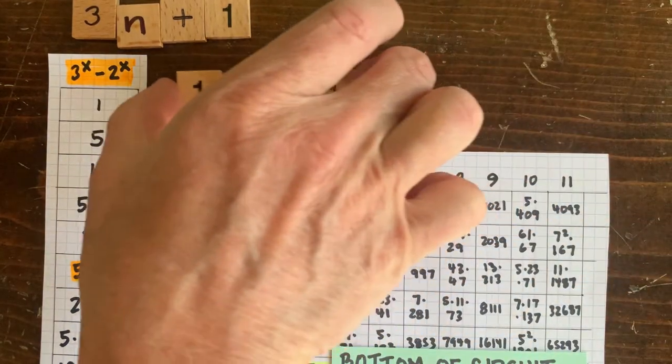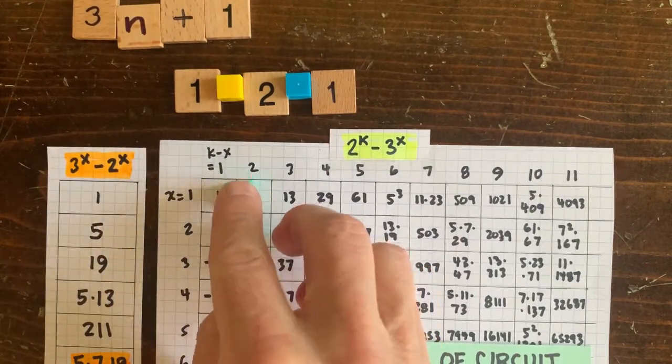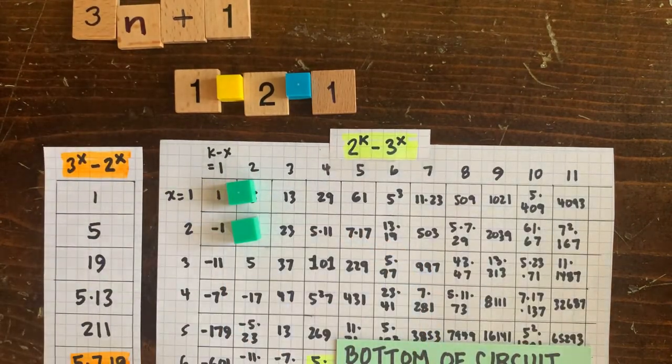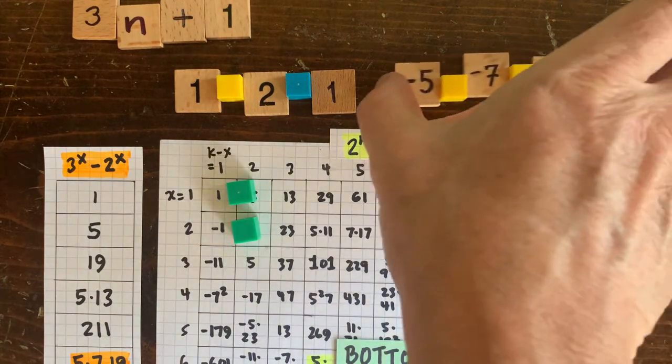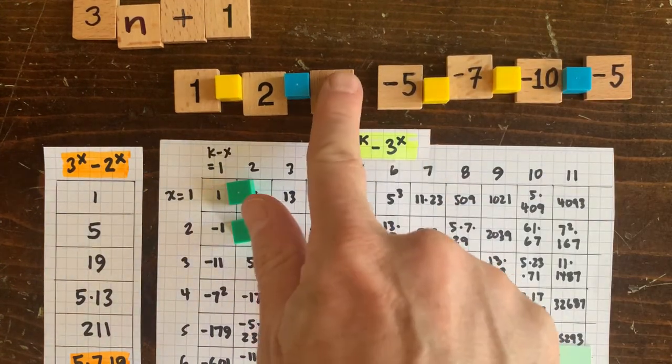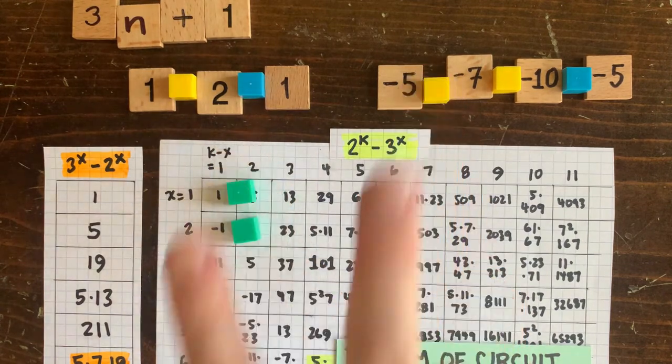Just under that, we have two up moves and one down move, which is the negative 5 circuit. It goes negative 5, negative 7, negative 10, negative 5. And those are the only two integer circuits that we know about.